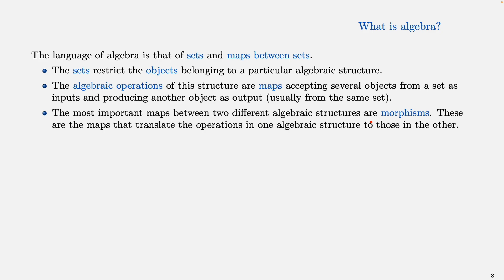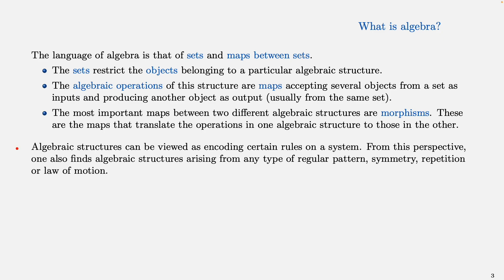The most important maps between two different algebraic structures are called morphisms. These are maps that translate the operations in one algebraic structure to the operations in the other algebraic structure, exhibiting some kind of compatibility between two algebraic structures.